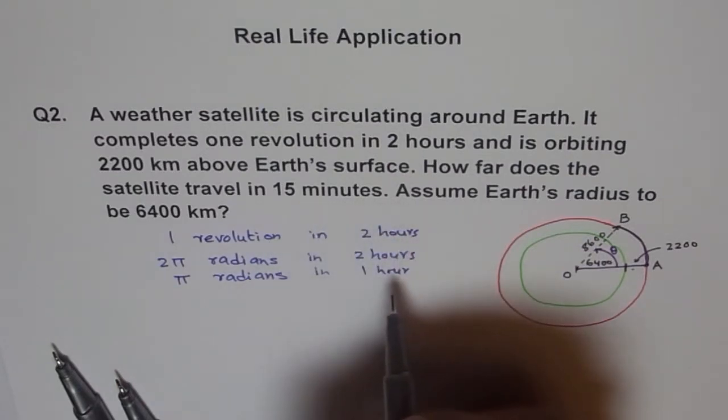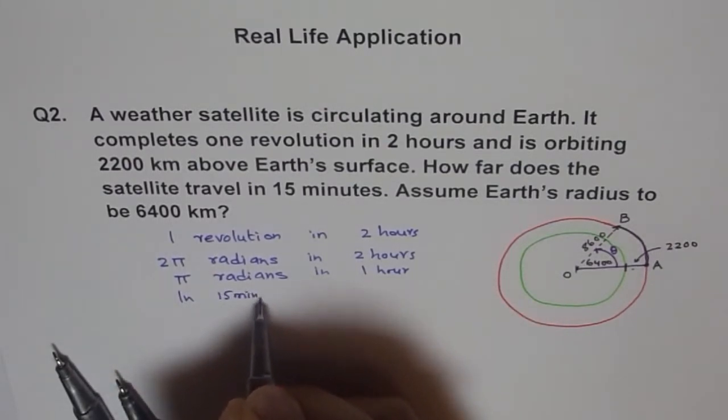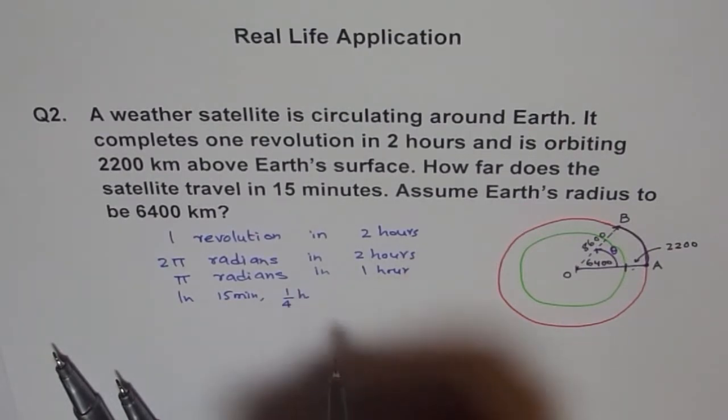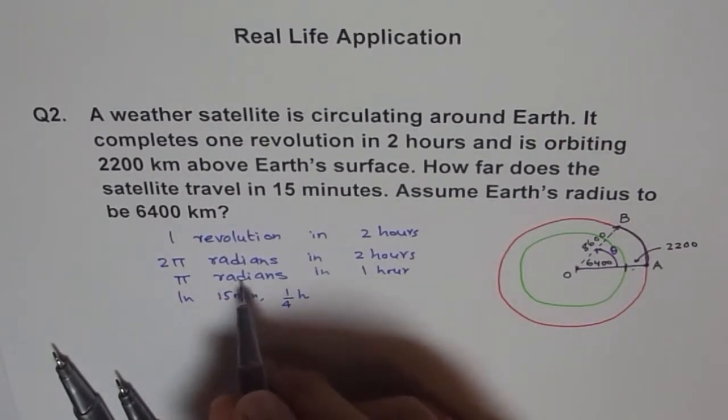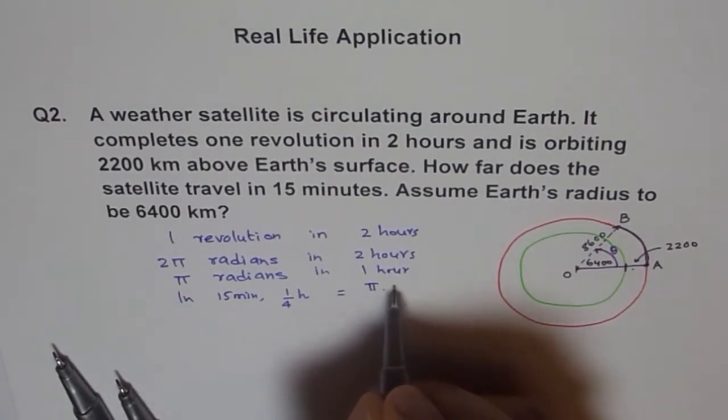15 minutes is one-fourth of an hour, right? So in 15 minutes, which is like one-fourth of an hour, correct? We need to find how many radians, right? It should be pi times one-fourth. Is it okay?